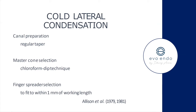Historically, the chloroform dip technique allowed you to modify the shape of the master cone's apical region to match the actual canal — you'd dip the tip in chloroform, insert it, and it would soften the GP to take the shape of the apex. We can no longer do that. My one piece of advice for cold lateral: make sure you're using the same accessory points as the finger spreader you're using — if using a size A finger spreader, use size A accessory cones.